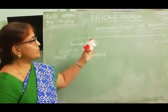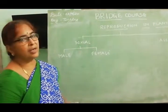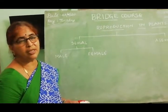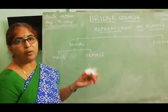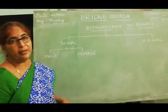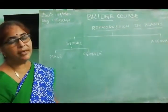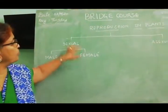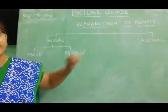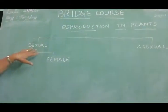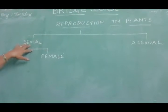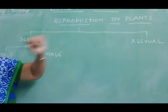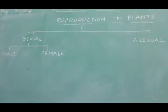Plants also have the characteristic feature of reproducing their own type. This reproduction in plants takes place in two ways: one is the sexual type of reproduction and the other is the asexual type of reproduction.